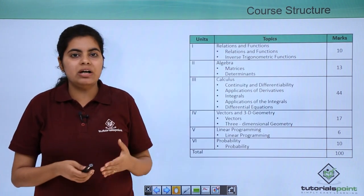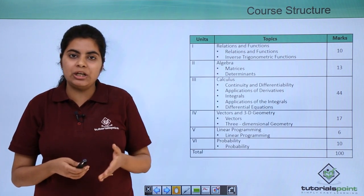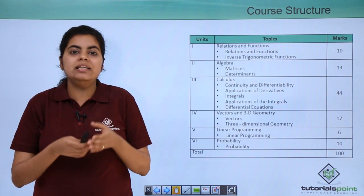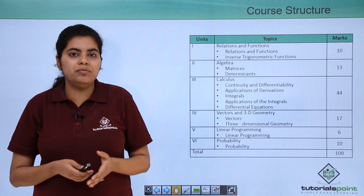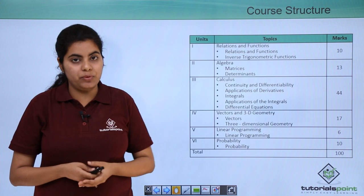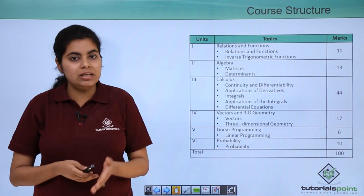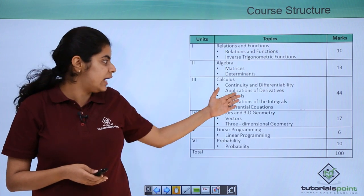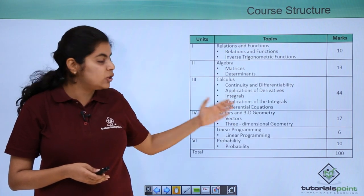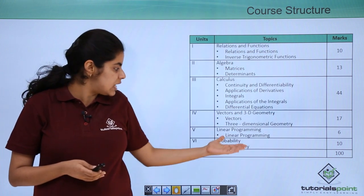So after we have covered all these things, I just need to mention two three things in particular again, that the easiest unit that you would find would be according to me algebra and linear programming. The most important one although you find difficult you have to cover it fully is your calculus. And after you have covered all these three units you can go for vector 3D, relation functions and probability.